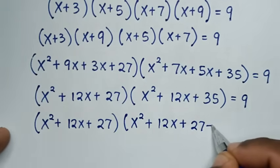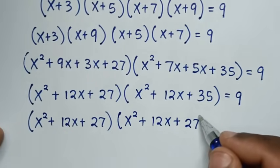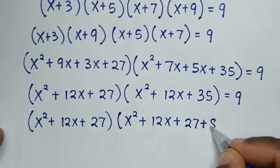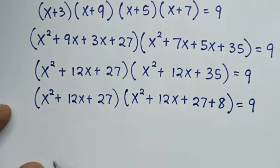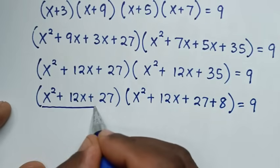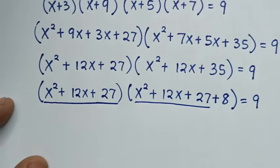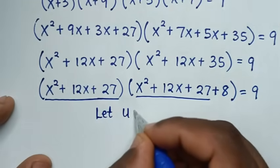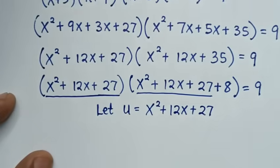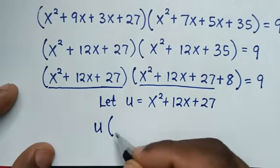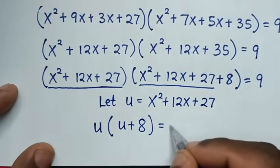So the equation becomes (x²+12x+27)(x²+12x+35) = 9. We notice that x²+12x+35 = (x²+12x+27)+8. We let u = x²+12x+27, so it becomes u(u+8) = 9.